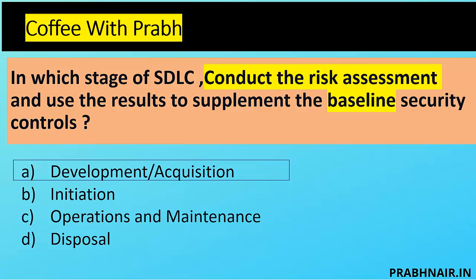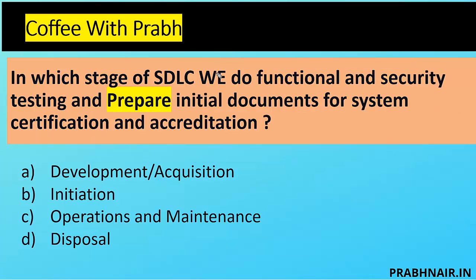One more important pointer: the question specifically says 'use the result to supplement the baseline security control.' Development and Acquisition covers both acquiring an application from a vendor and in-house development. In the NIST framework, development includes the design phase, where we document controls. In initiation we identify controls, but since the question asks about supplementing controls with results, we go with answer A — Development and Acquisition.